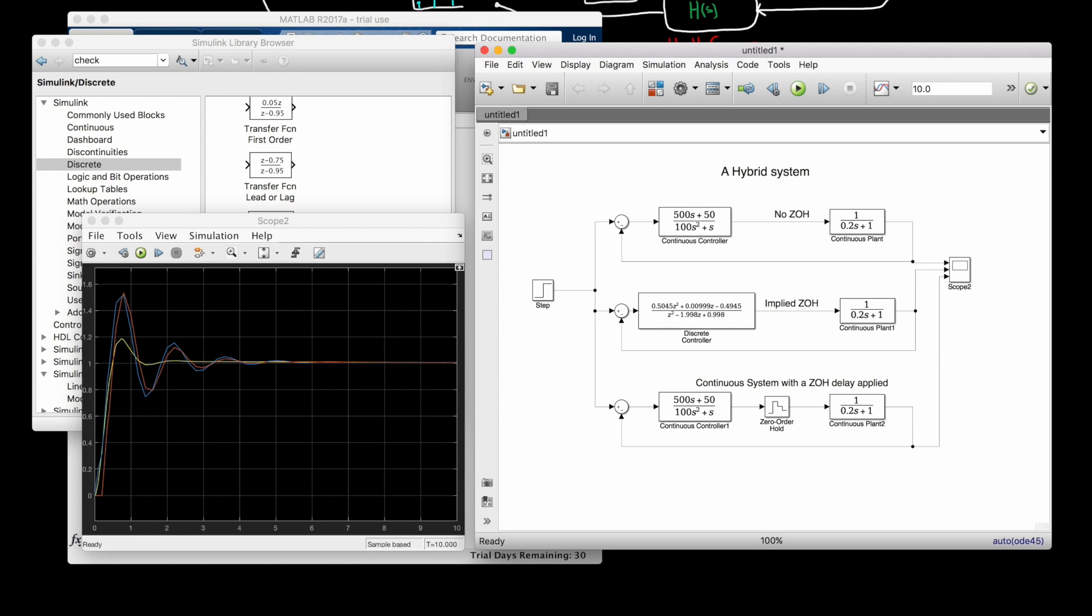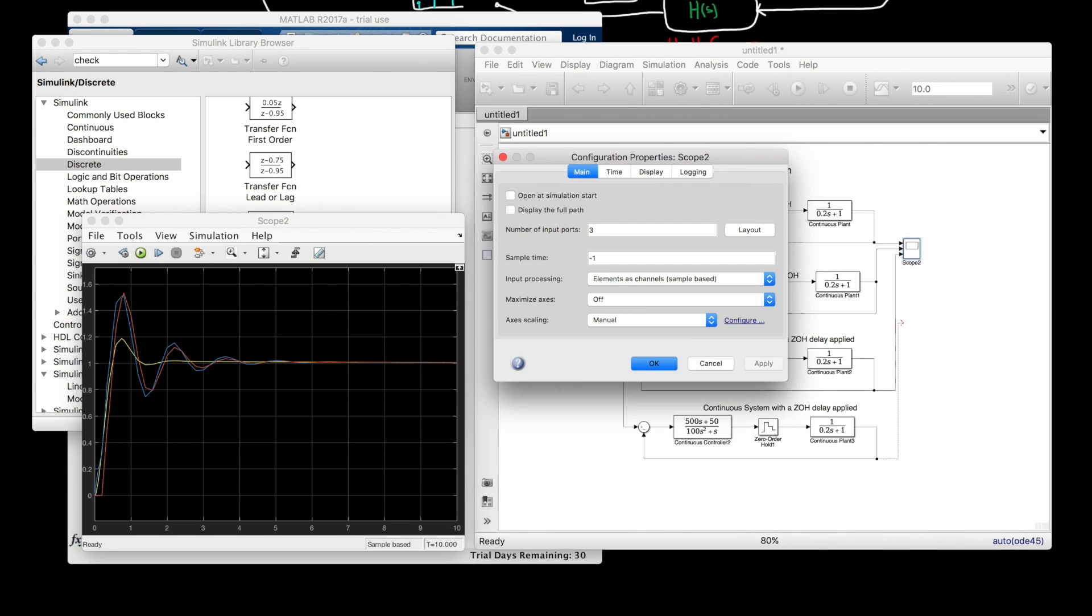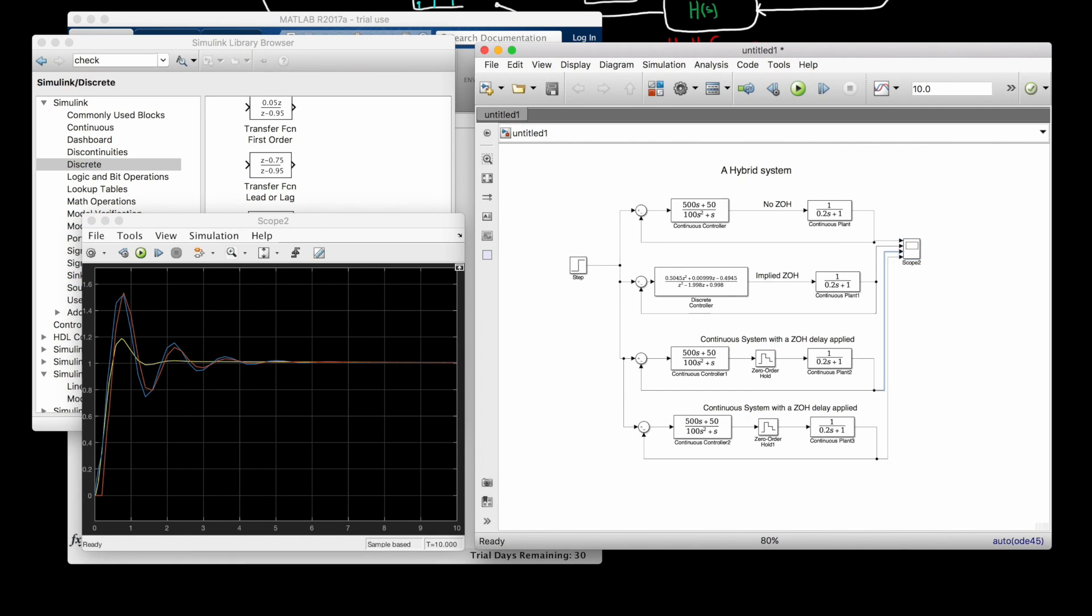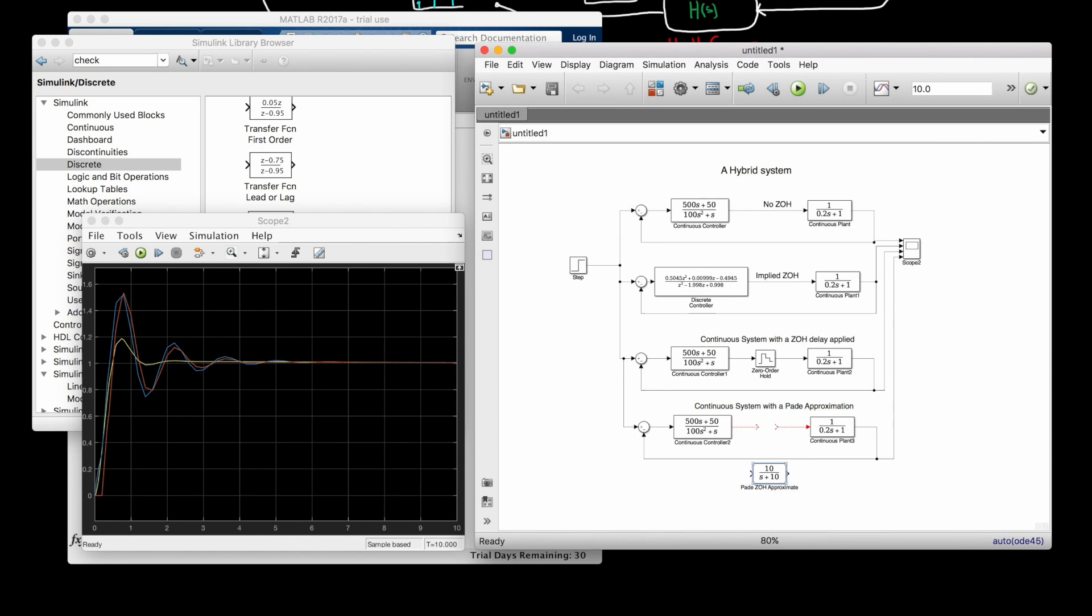The problem is, you can't use classical control techniques with a zero-order hold because that function is non-linear. But a way around that problem is to just approximate the zero-order hold effects with an S-domain transfer function. Once we do that, then we can use classical control techniques to design the appropriate controller. And you can get that transfer function with a Pade approximation of the hold.